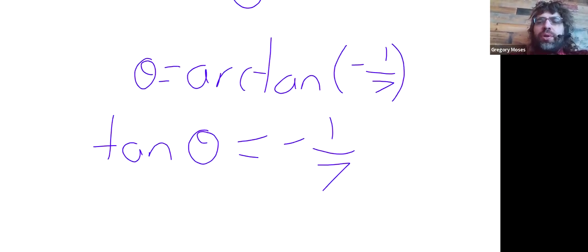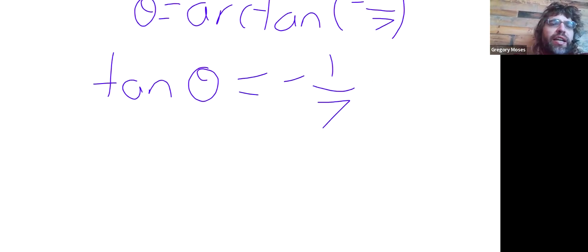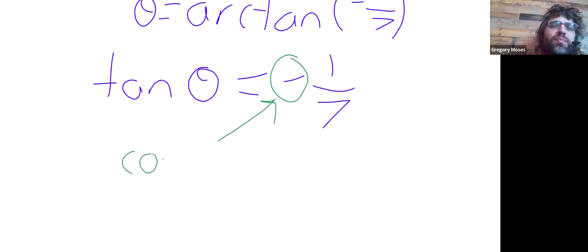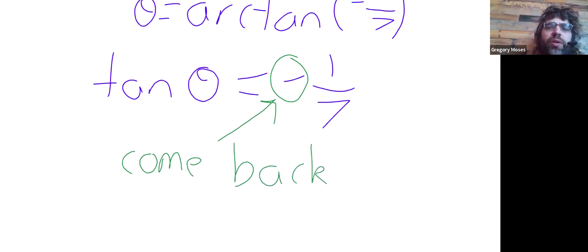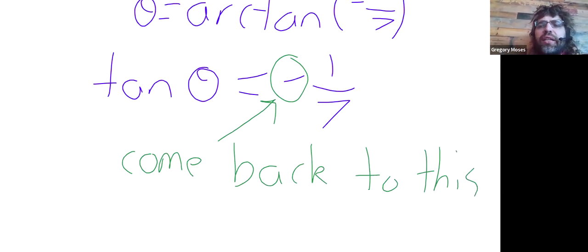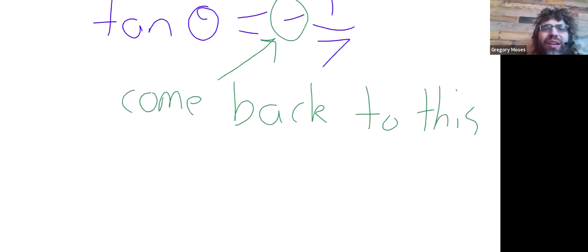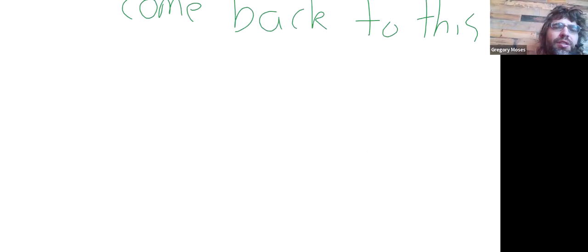And now, I'm going to build a right triangle, but let me change the color. For just a moment, I'm going to pretend we don't have that negative sign. We're going to come back to it. The tangent of Theta is one-seventh.